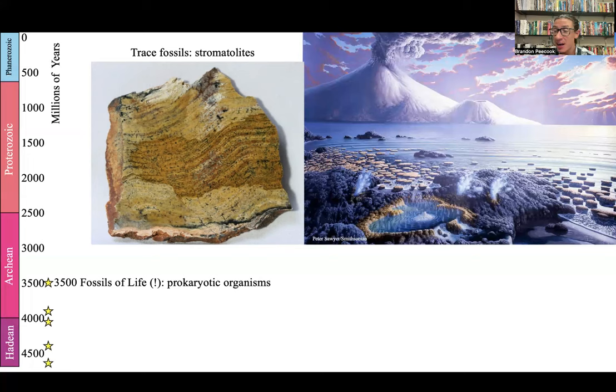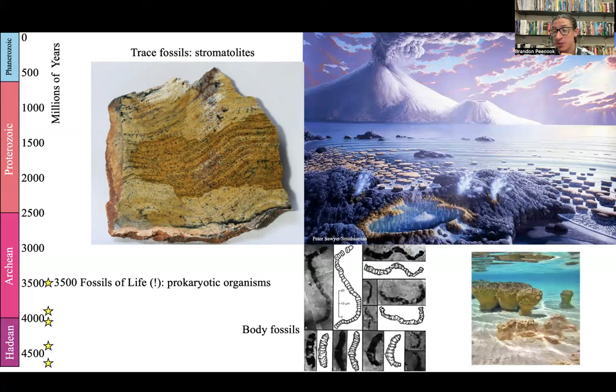We see those kinds of things living today in places like Australia — stromatolites still can be found in the world. Living stromatolites covered in single-celled organism communities look like these fossils. There are also some really exciting potential body fossils from early single-celled organisms that are also around 3.5 billion years old. So whether it's 4 billion or 3.5 billion years, it's definitely by 3.5 billion — that's when life starts on this planet, and that life is single-cellular.